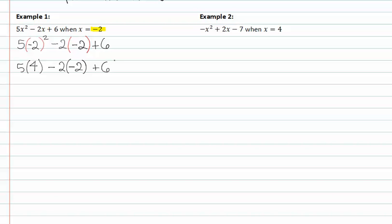Rewriting everything else, and now multiplying, I get negative two times negative two, which will give me a positive four.